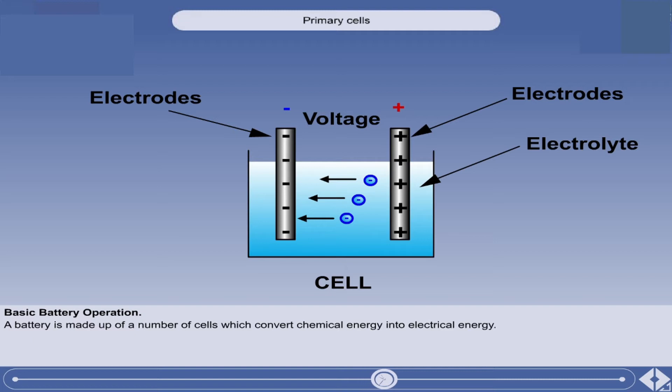During the transfer of electrons, the chemical composition of the two materials changes.